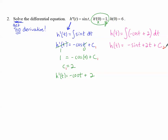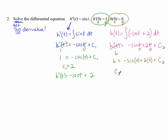Now we have an initial condition involving H of T. This is the X and this is the Y. So in place of H of T I put 6, and in place of T I put 0. So 6 equals negative sine of 0 plus 2 times 0 plus C sub 2, which ends up equaling 6. So now I can rewrite my original function: H of T equals negative sine of T plus 2T plus 6. I've solved it because there are no more derivatives.